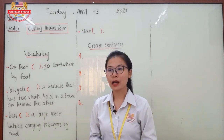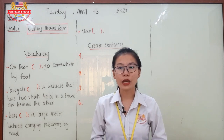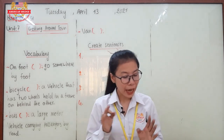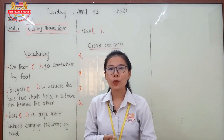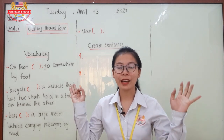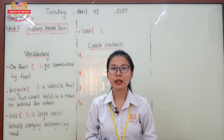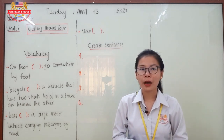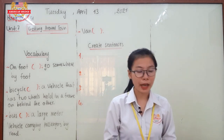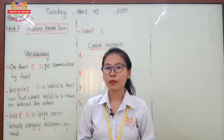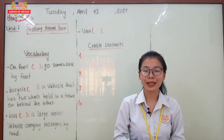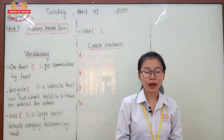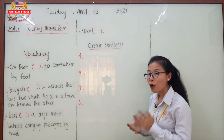Taxi refers to a kind of car or vehicle that carries passengers from one place to another place for payment. Helicopter refers to a kind of vehicle that can fly and is smaller than an airplane — it cannot keep a lot of people inside, different from airplanes. Motorcycle refers to a vehicle that has two wheels with a motor inside and has no pedal.